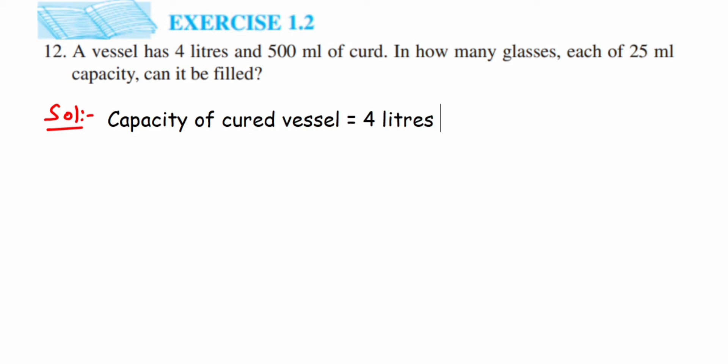We're going to convert the liters into milliliters. We know that 1 liter equals 1000 milliliters, so this will be equal to 4 × 1000 ml plus 500 ml.